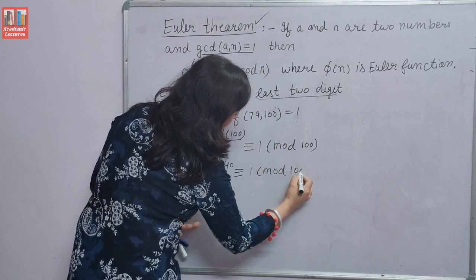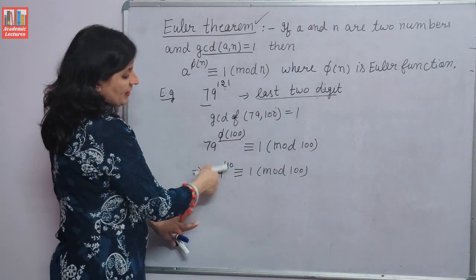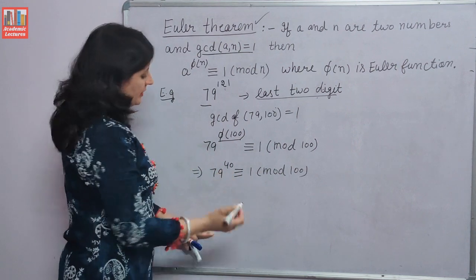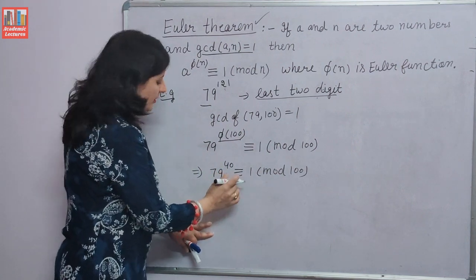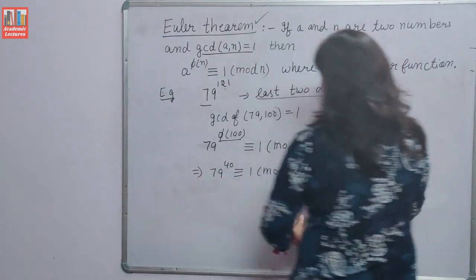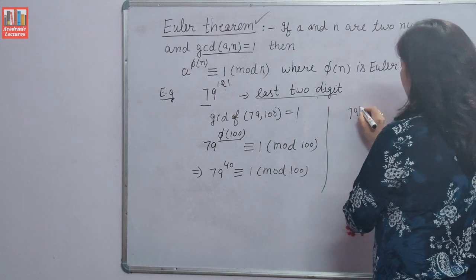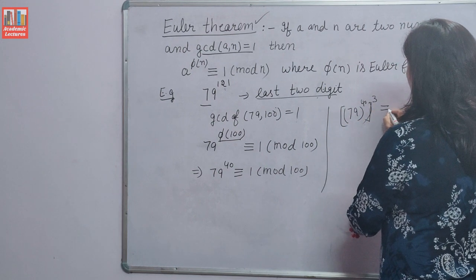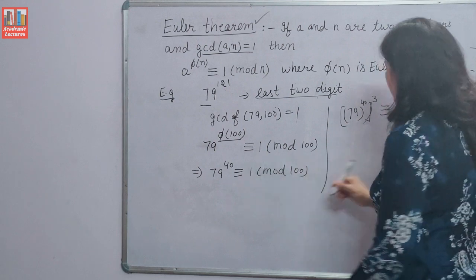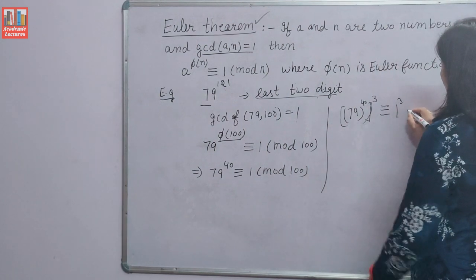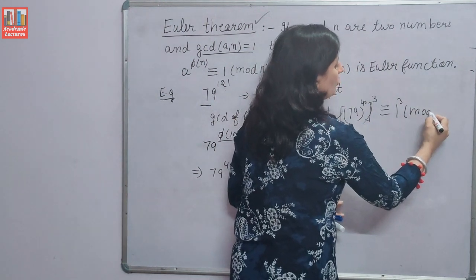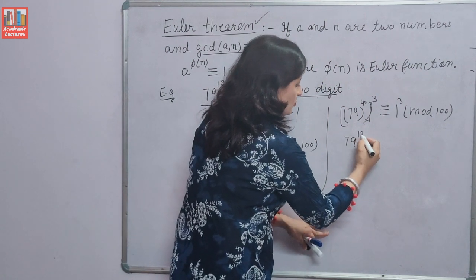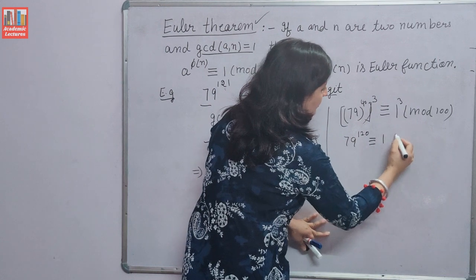But we need the value for power 121. The closest multiple of 40 below 121 is 120. So we raise both sides to the power 3: 79 raised to the power 40×3 = 79 raised to the power 120 is congruent to 1³ = 1 modulo 100.